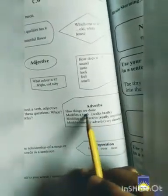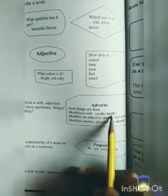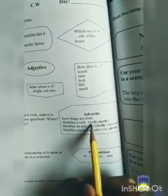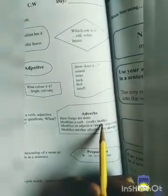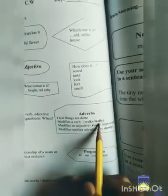How things are done? Modifies a verb. Walks lazily. Now, see here is an action. Walks. And, the word lazily describing it that how it was walking? Lazily.